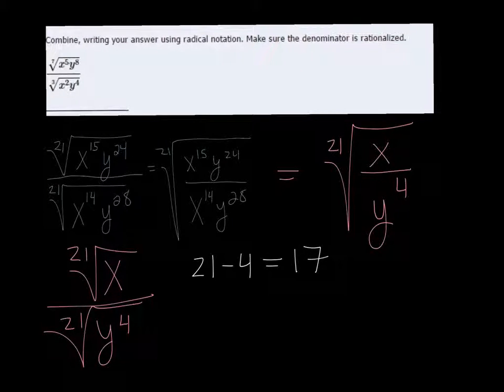Well, it's 17, so I need to multiply by y to the 17th, so that I get y to the 21st, and then my radical will go away.